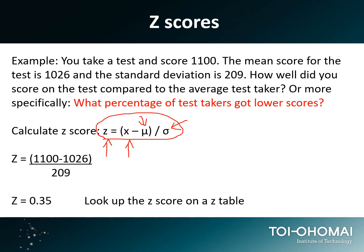You've got the z-score — that's what we're trying to find out. You have your sample value, any particular value that you want to find a percentage for, and then you have the mean for your data set, and you divide it by the standard deviation. For this example: you take a test and score 1100. We're going to plug in values into this formula — 1100, the mean score for the test is 1026.